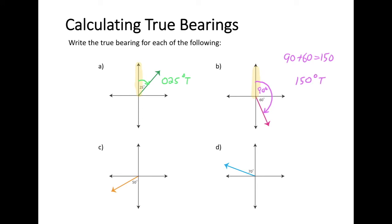Looking at example C, again, we start with the north direction and look at the angle between north and the direction we are traveling or pointing towards. The first quadrant is 90 degrees, the second quadrant is 90, and then we have an additional 50 degrees. So 90 plus 90 plus 50 equals 230. The answer is 230°T.